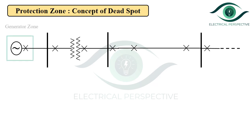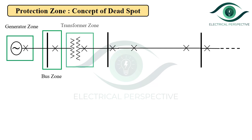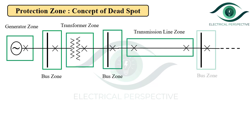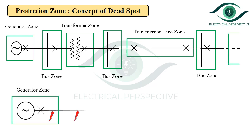Referring to the figure, there is a separate zone for the generator, a separate protective zone for the bus bars, and similarly separate zones for the transformer and transmission line. For better understanding, let us consider the separate generator protection zone. As you can see in the diagram, if the fault occurs within the zone, then that fault is called an internal fault.